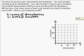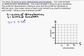If I look at the fact that they said I have 30 acres to grow strawberries and tomatoes, I can translate that this way. S plus T is less than or equal to 30, and it's less than or equal to because I can't have any more than 30 acres.